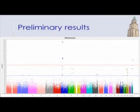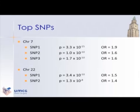The p-values of the top SNPs on chromosome 7 are 10 to the power of minus 15. The top marker has an odds ratio of 1.9, meaning that if you have this marker you have 90% more chance of developing the disease. We also find a significant region on chromosome 22, with nearby SNPs all pointing to the same location.